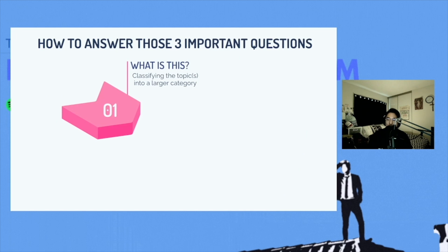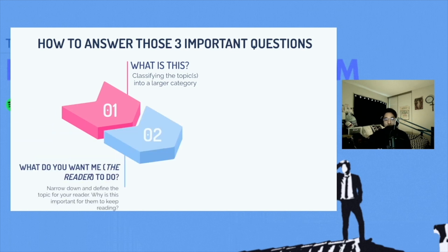The three questions that we were looking at: what is this? So we're going to be classifying the topic into a larger category. In this case, if you choose naturalism, the larger category would be American literature. Then let your reader know what we want them to do. This is when you narrow down and define the topic for your reader. Let them know why this is important for them to keep reading.